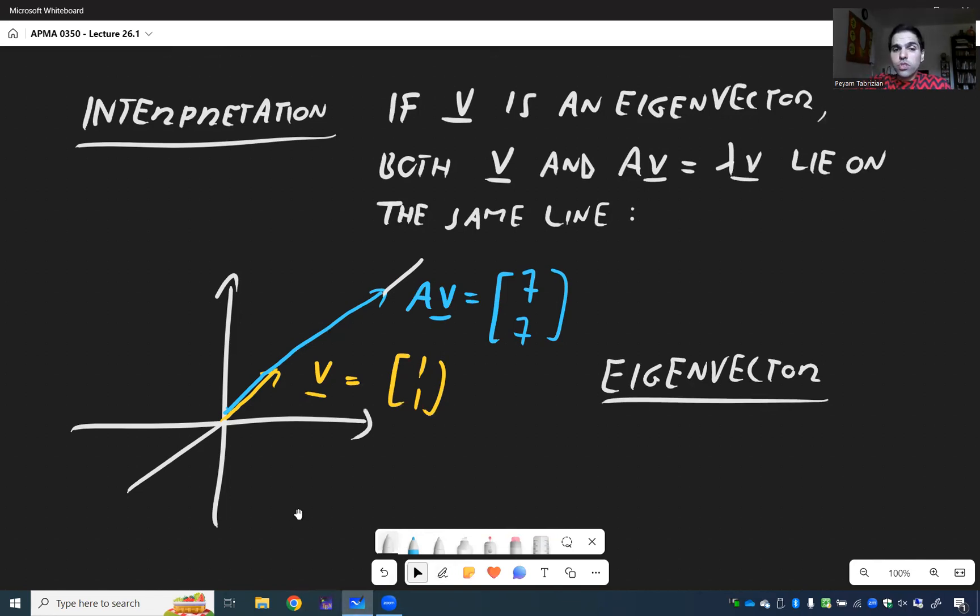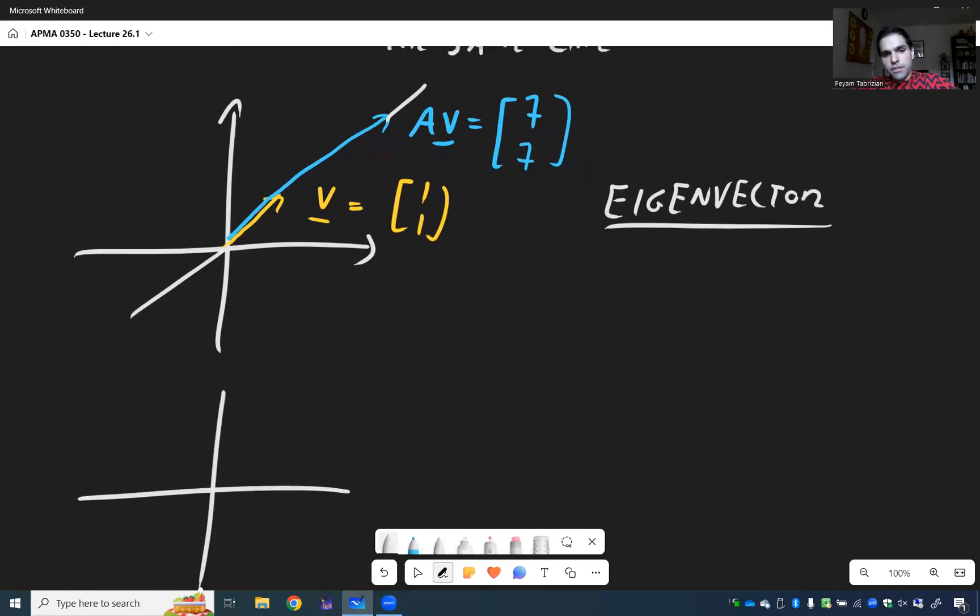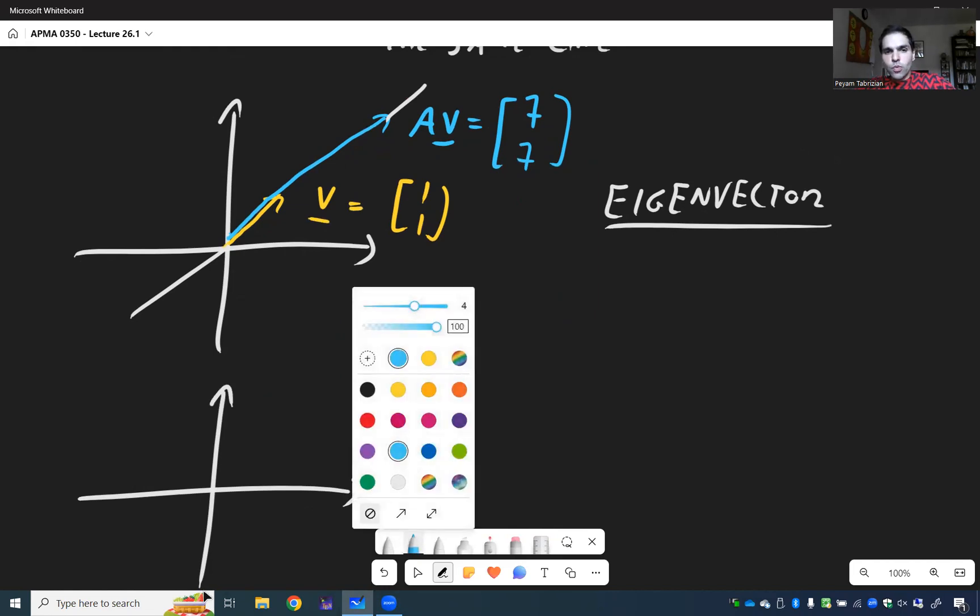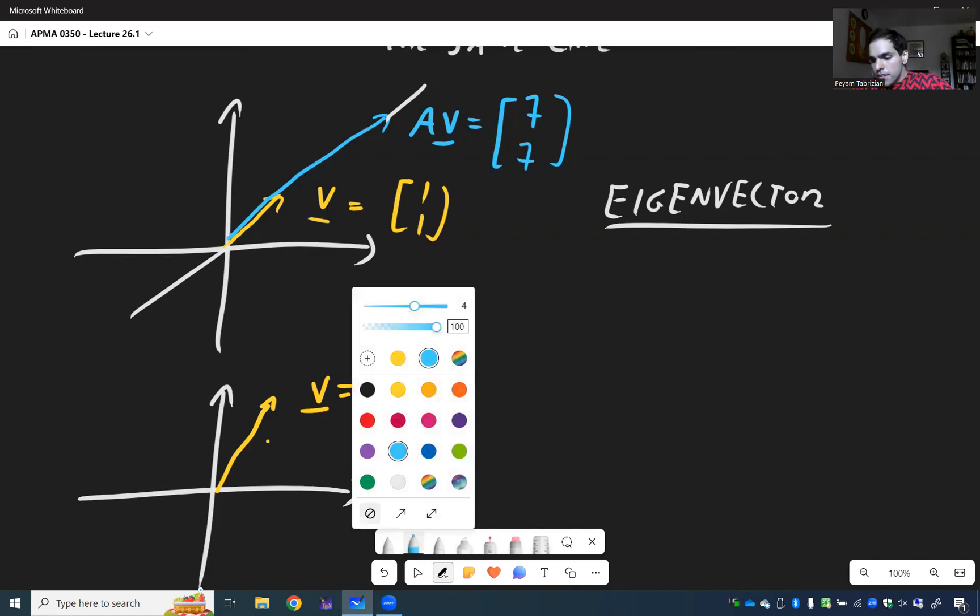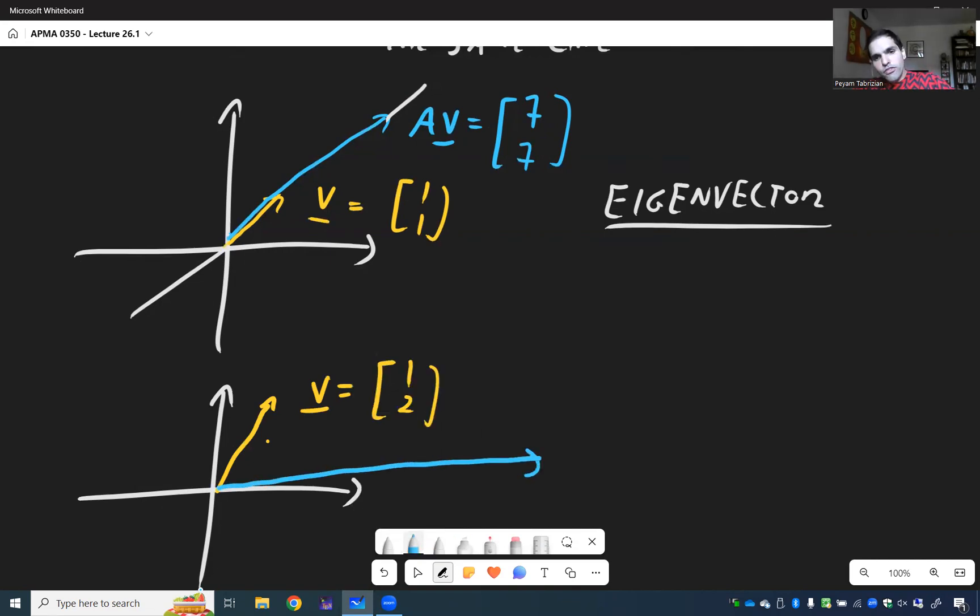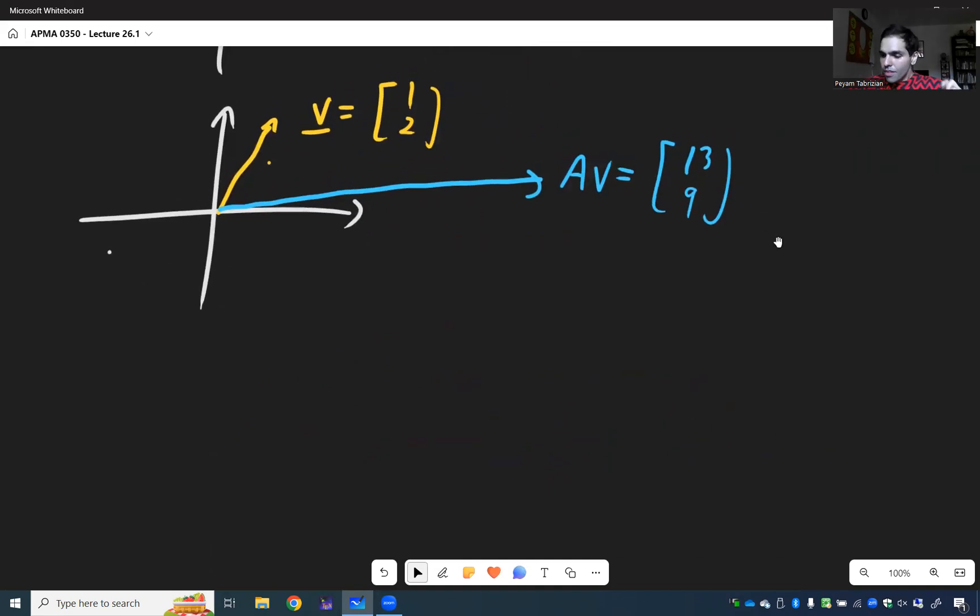But in general, if you just choose a random vector, they do not lie on the same line. Because if you choose the vector 1, 2 for instance, V equals 1, 2, then you can check that AV is somewhere completely different. AV would be 13, 9 for instance. And in particular, there is some kind of a resonance effect going on. Where you start with the vector 1, 1, and if it's an eigenvector, AV just magnifies it. So one application would be a resonance effect.